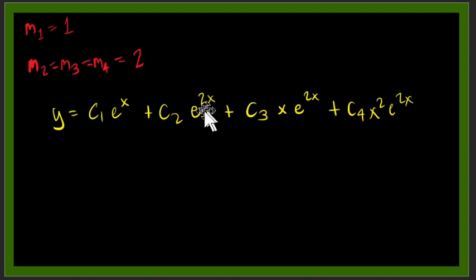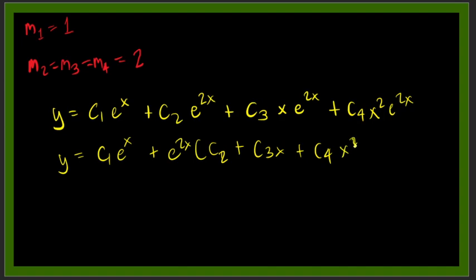Or you can also simplify this one if you want so that you will have a much simpler expression. So we have C1 E to the X plus E to the 2X times the quantity C2 plus C3 X plus C4 X squared. So that is the simplified answer.